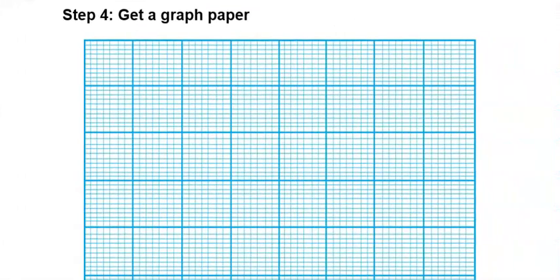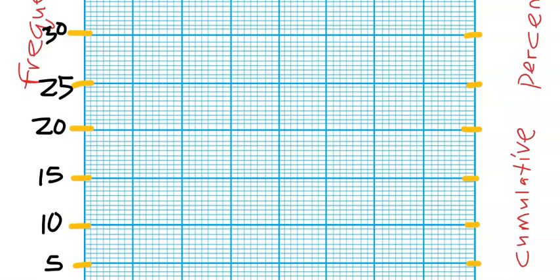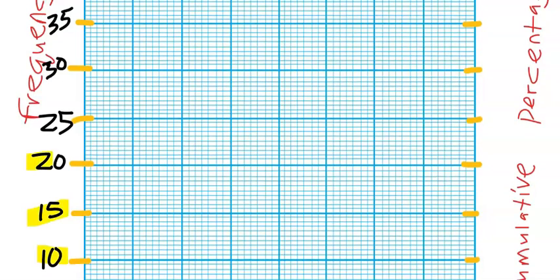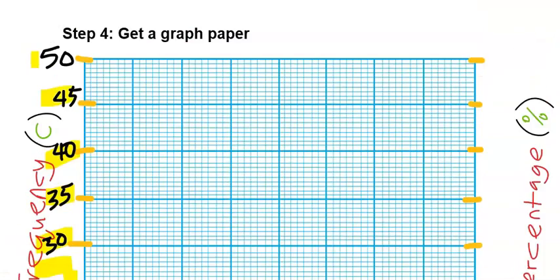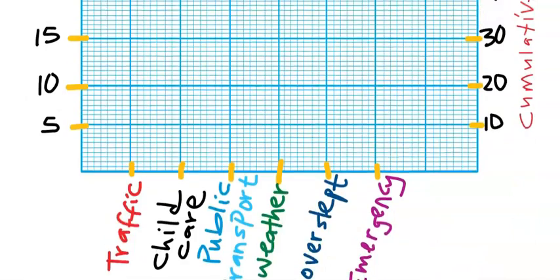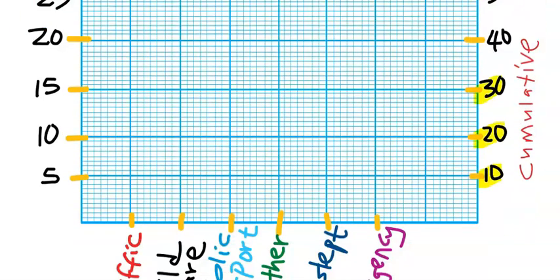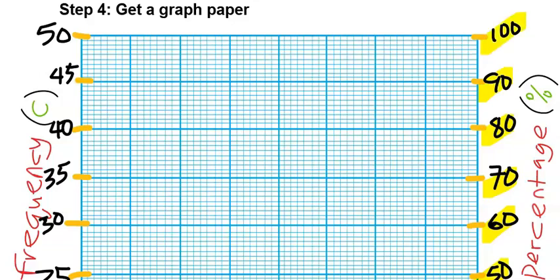Step 4: With the help of a graph paper, we can now plot the Pareto chart. Consider the frequency column. The highest number is 45, 7 is the smallest number. On the frequency axis, we consider 5, 10, 15, 20, 25, 30, 35, 40, 45, 50. And the cumulative frequency got 28.13 as the smallest and 100 as the highest. While on the right, for the cumulative percentage: 10, 20, 30, 40, 50, 60, 70, 80, 90, and 100.